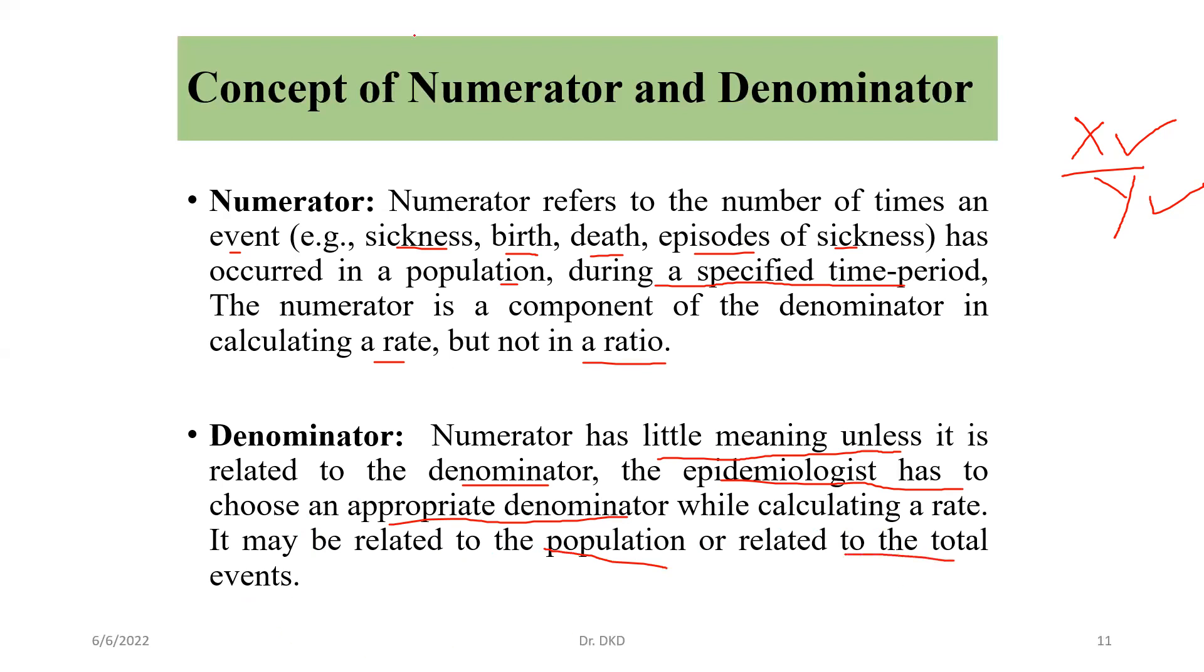So these basic points we need to understand when we measure epidemiology. There are two points which are known as numerator and denominator. Both are important. Thank you.